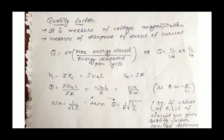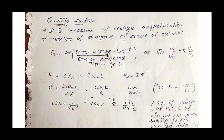The quality factor is the measure of voltage magnification, or the measure of sharpness of the current curve. Q can be given as the voltage across the inductor divided by the voltage across the resistance, or the voltage across the capacitor divided by the voltage across the resistance. The quality factor can be calculated in terms of L and R, in terms of bandwidth, and in terms of R, L, and C. If we know the values of resistance, inductor, and capacitor, the quality factor can be determined. Thank you, students.